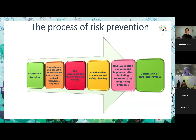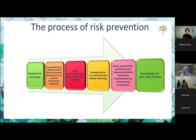The next thing to think about is the process of risk prevention, which has six steps. The first is engaging and goal-setting with the child or young person — why are we meeting, what are our goals. Then there is a comprehensive child and adolescent mental health assessment: biopsychosocial, cultural formulation. Then a risk assessment, a risk formulation, a collaborative safety plan, and a risk prevention and implementation plan — which includes treatment for the underlying problems for which you will refer to a mental health professional. And then there is ongoing care and review.